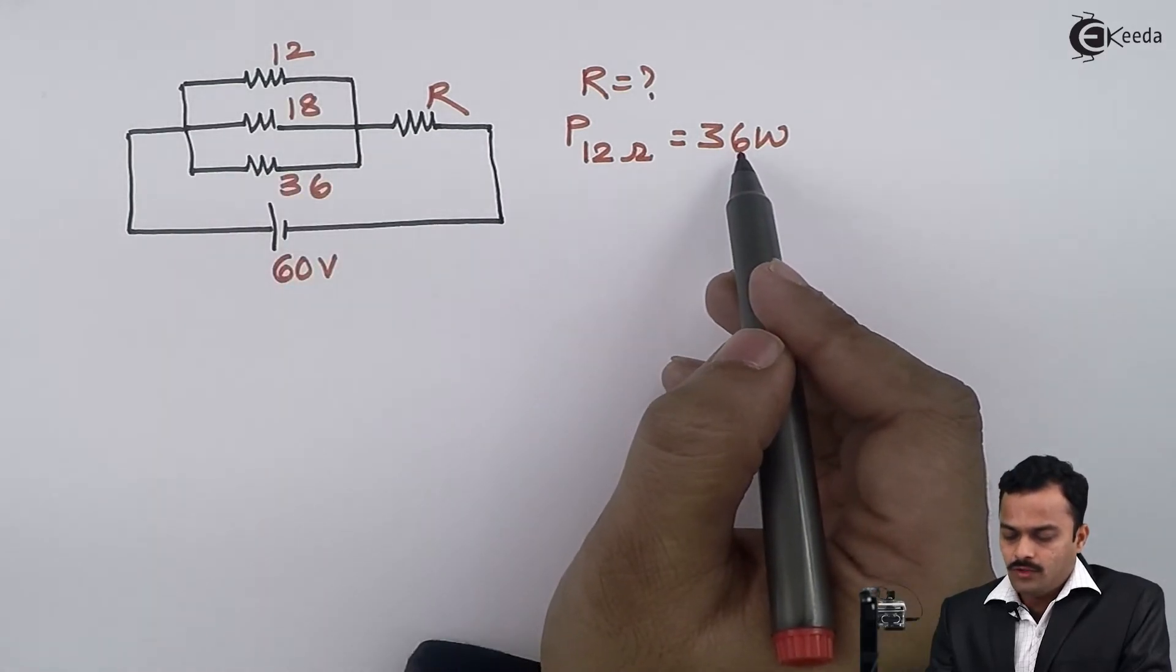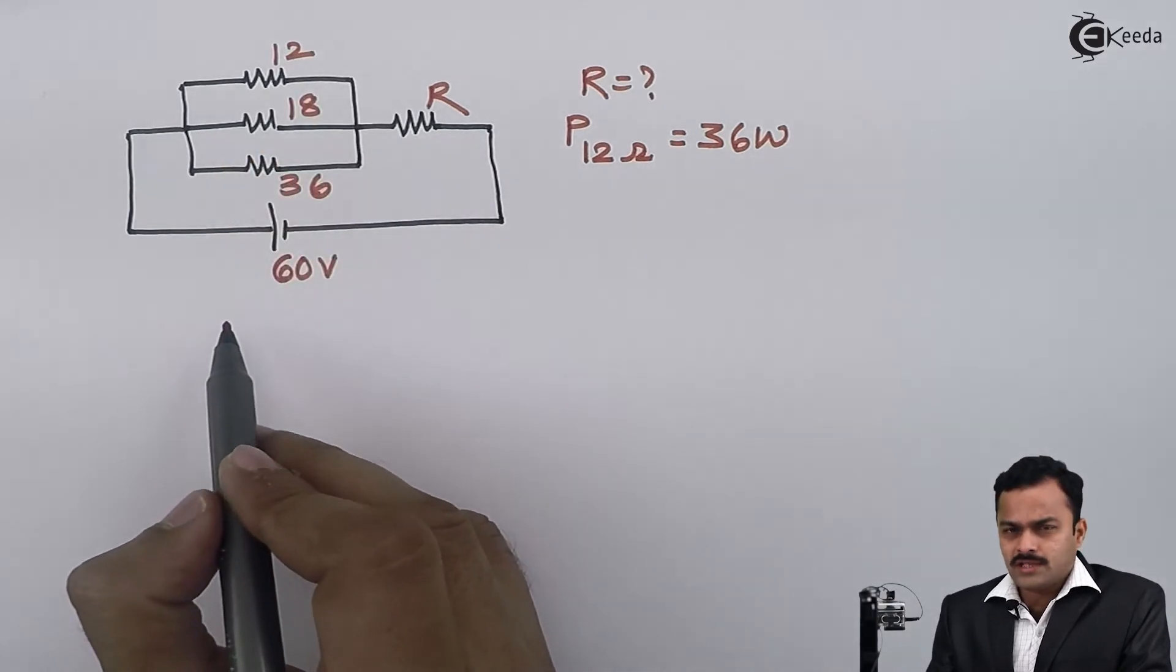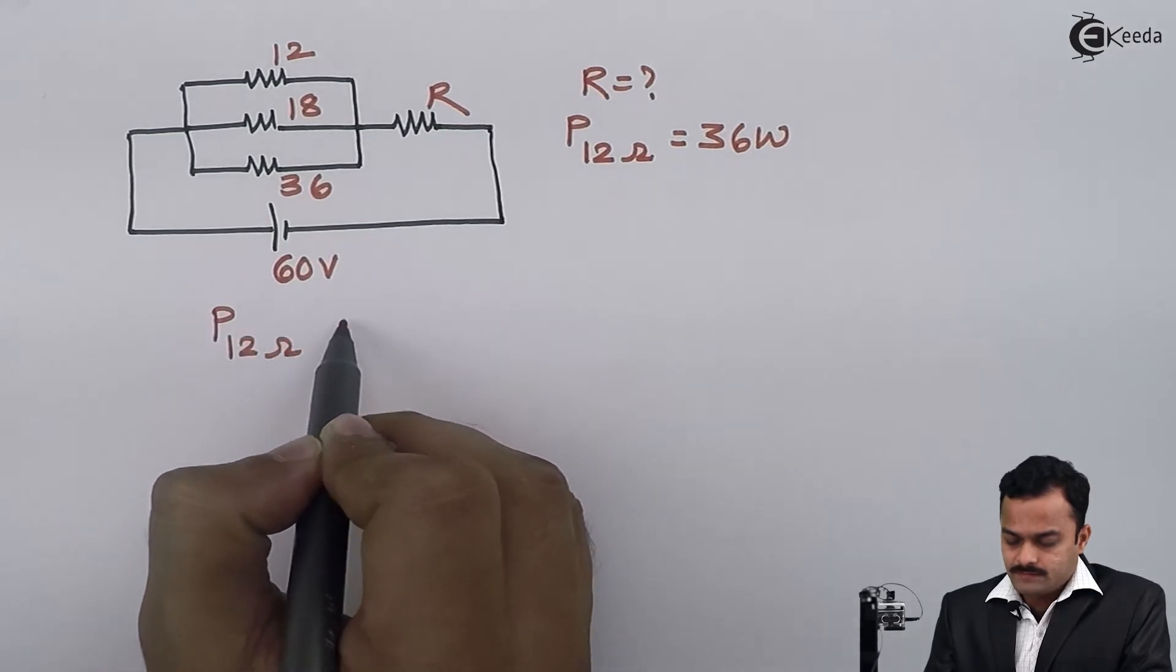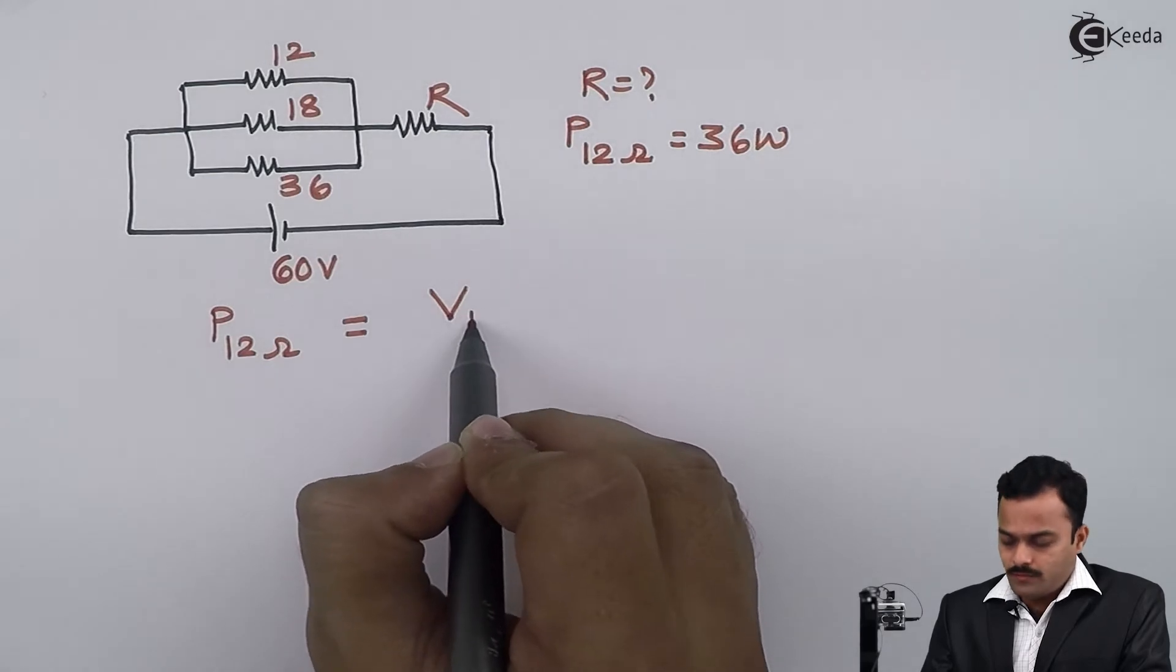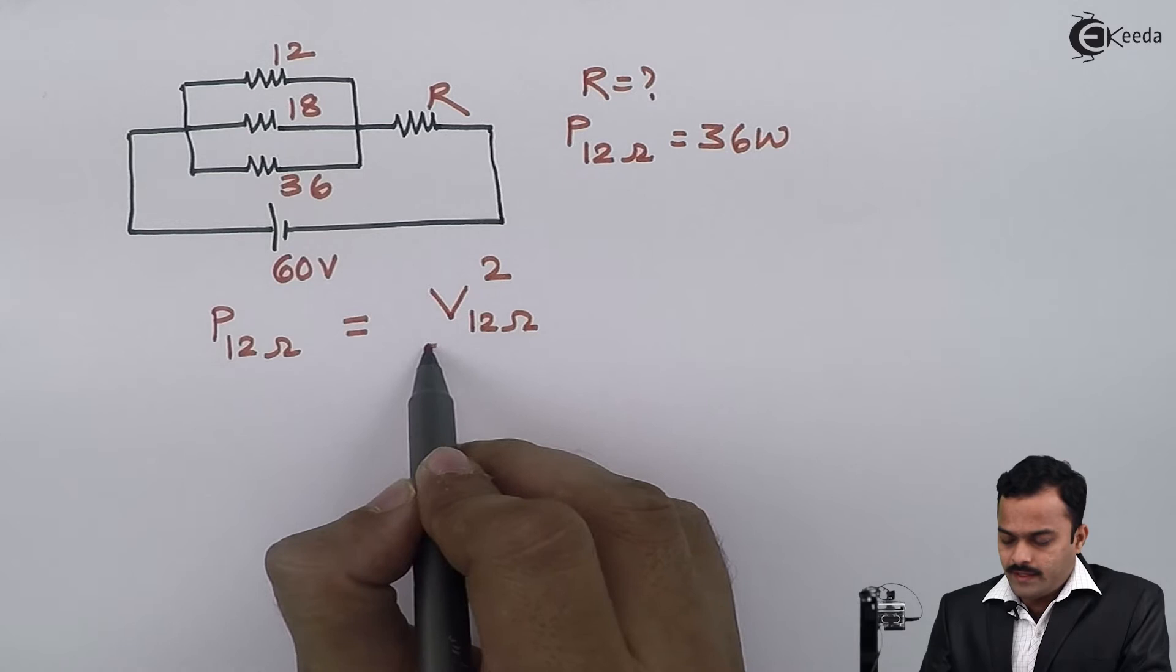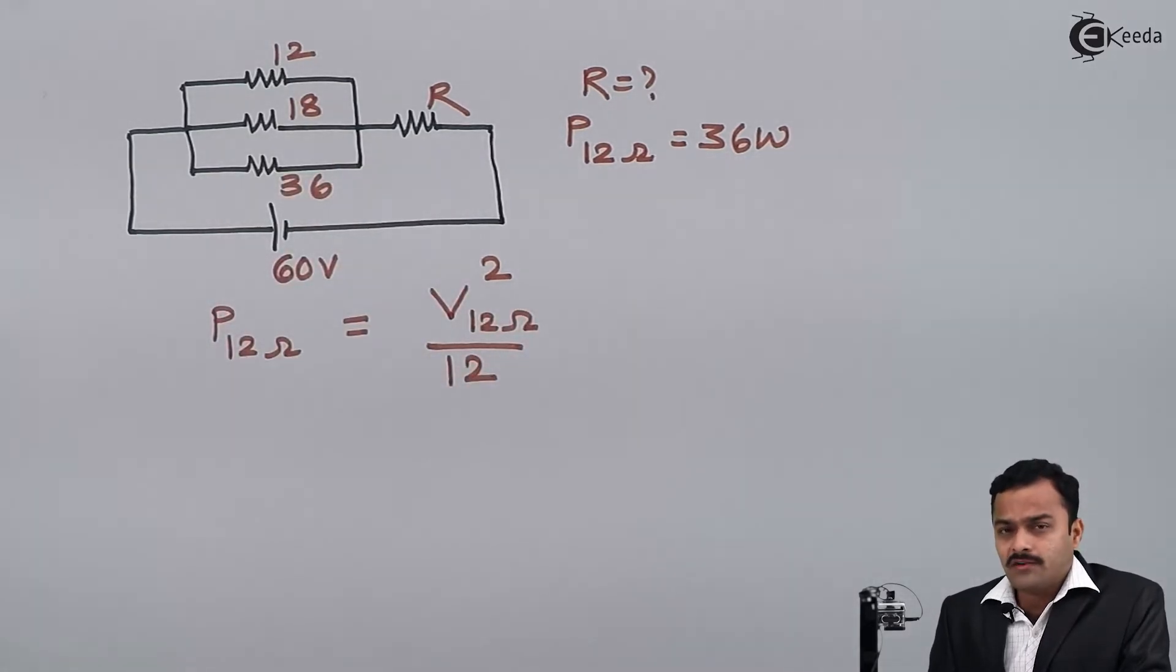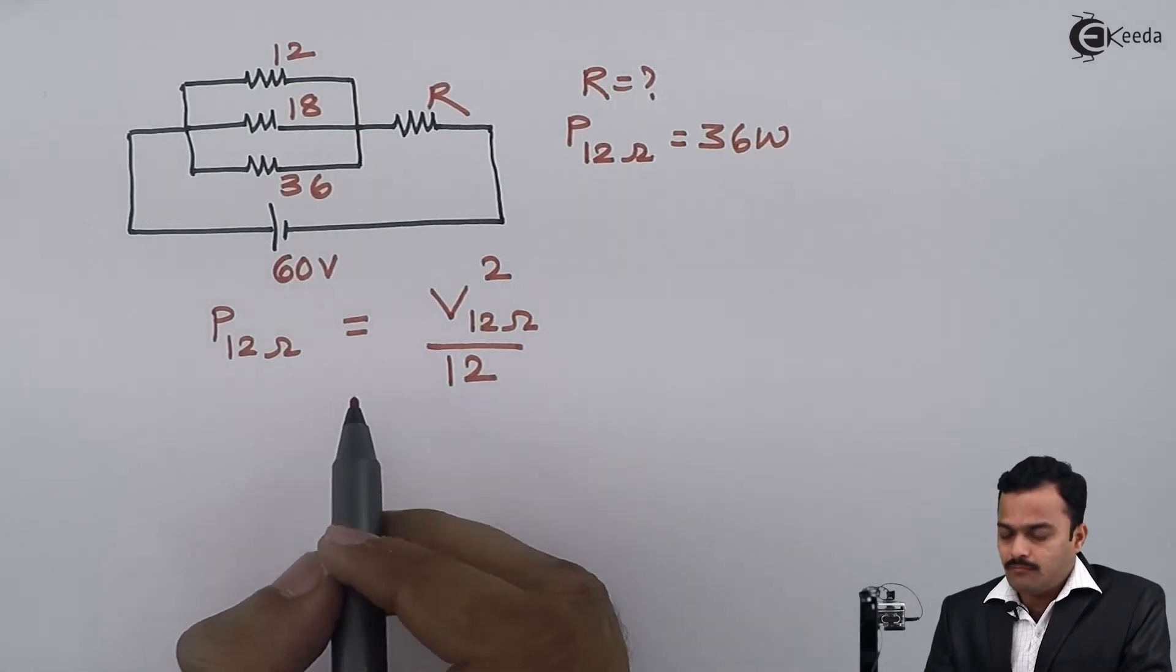I know power consumed by the 12 ohm resistance, and I know the value of this resistance is 12, so I'll use the formula: power consumed by 12 ohm resistance equals voltage squared divided by 12 ohm resistance. I'm using the formula V² / R.